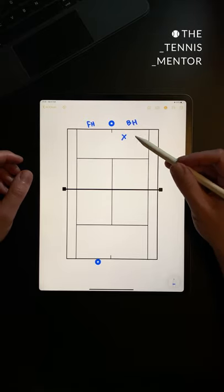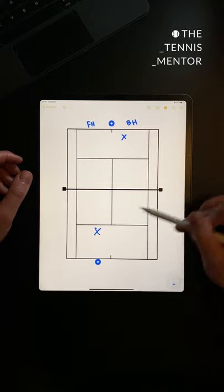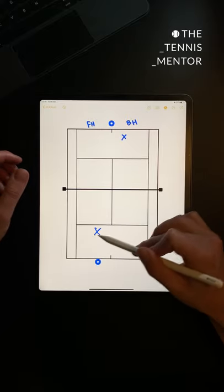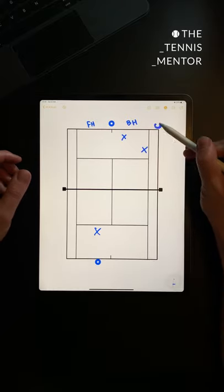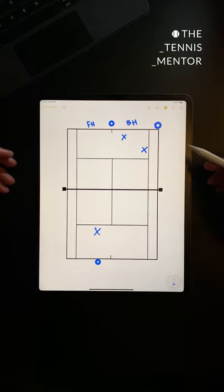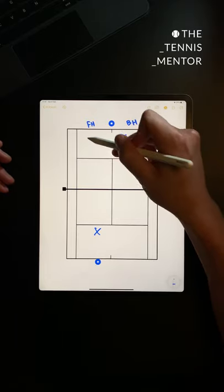you will expect your opponent to hit their next shot somewhere around here, which will allow you either to hit a backhand or a forehand wider, pushing them out of court. This is where you finish the point and you hit your forehand or your backhand into the open space.